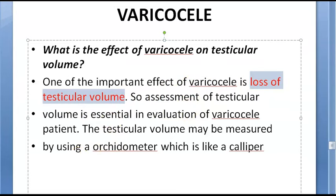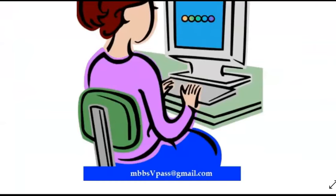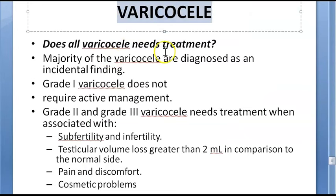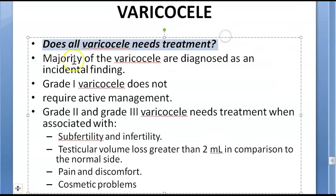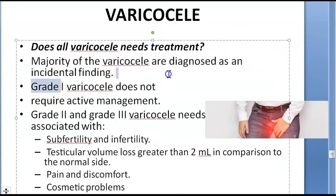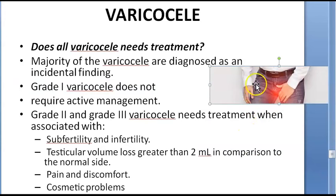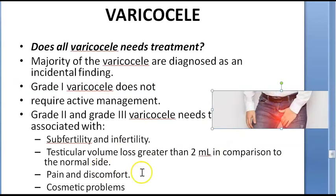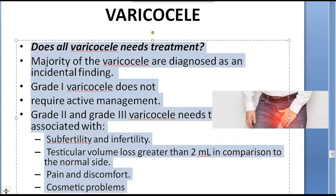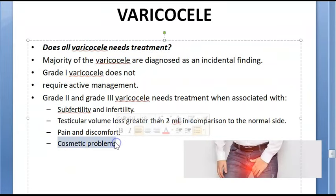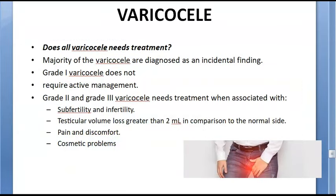So infertility is not just about temperature — it involves hormonal imbalance, hypoxia, depletion of intracellular glycogen, parenchymal injury, decreased spermatogenesis, maturation arrest, and tubular thickening. There is also loss of testicular volume, which is why the testis appears small. Treatment is considered for Grade 2 and 3 when associated with subfertility, testicular volume loss greater than 2 ml compared to the normal side, pain, or cosmetic concerns.